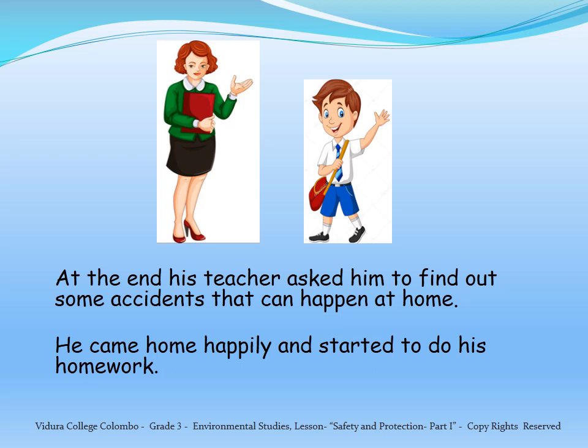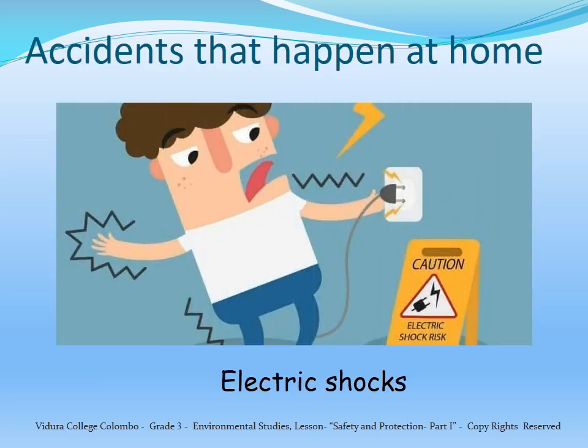At the end, his teacher asked him to find out some accidents that can happen at home. He came home happily and started to do his homework. Dishan found out some of the accidents that can happen at home. Number 1: Electric shocks. Children, you shouldn't touch electric equipment with wet hands. Always be aware of the condition of the electric equipment before using. You can wear rubber slippers to minimize the damage caused due to electric shock.